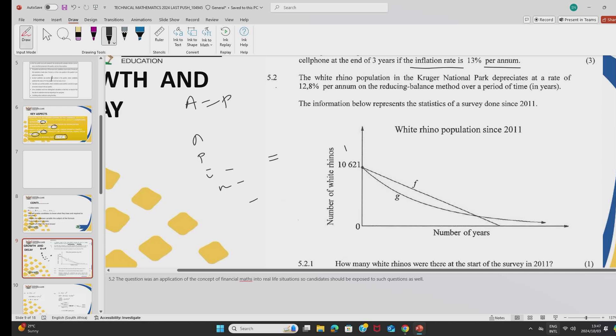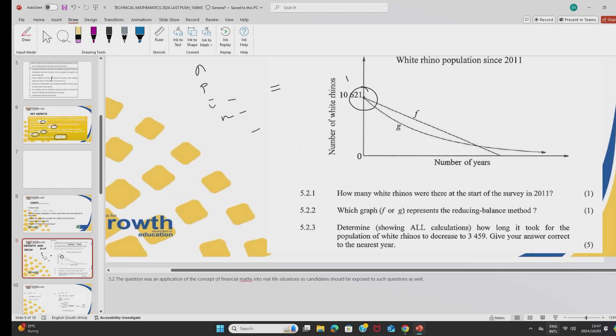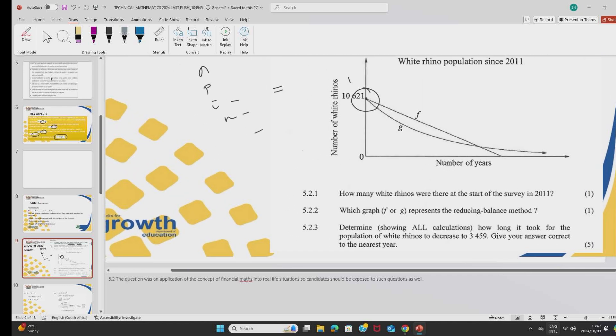What does this figure mean here? It means initially there were 10,621 rhinos, then eventually they decreased. There was a depreciation in their population. The first question says, how many white rhinos were there initially in 2011? Then we would quote that figure there. There were 10,621. Do not say rands because this is not money. That is an application in real life situation.